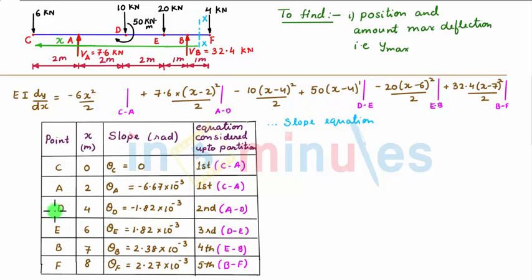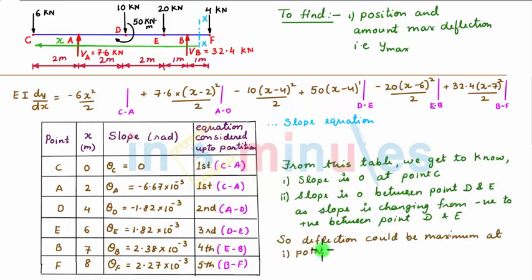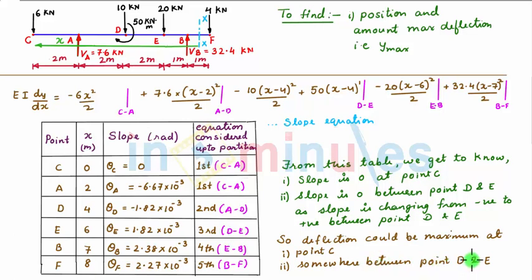The first step is to determine the position between point D and E where the slope is 0. To find this position, we again consider the slope equation, set slope equal to 0, and use the slope equation up to the third partition, which is valid between point D and E.